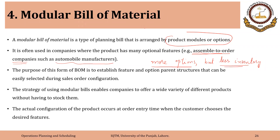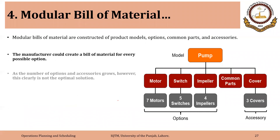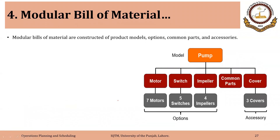The inventory kept is of sub-assemblies, modules, or options. So the company can offer a wide variety of different products without having to stock them — more options but less inventory. The actual product configuration occurs at order entry when the customer chooses the desired features. A simple example of a pump illustrates this.